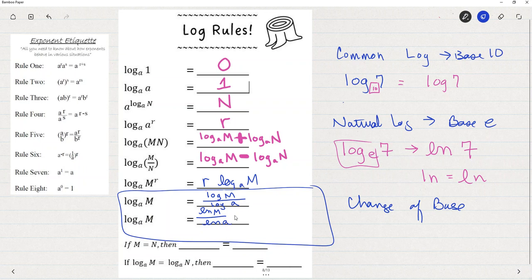And then if I want to use base e, I'll say log base e of m divided by log base e of a. Or in other words, common log of m divided by the common log of a. Natural log of m divided by the natural log of a. If you're looking for a way to remember that, notice that the base is always at the basement, right? Or the base is always at the bottom. The base of the log goes to the denominator. It goes into the bottom part.